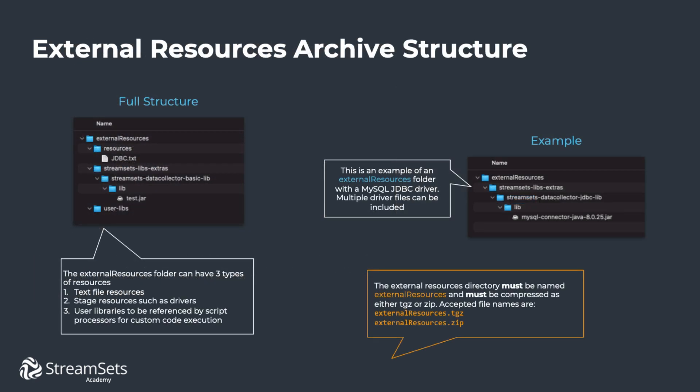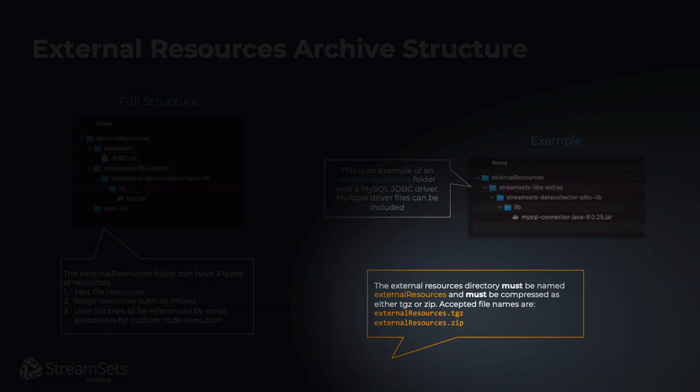The external resources archive folder structure is pretty simple. The folder can have three types of resources: text file resources, stage resources such as drivers, and user libraries that may be dependencies in a script evaluator stage for custom code execution. Note that the external resources folder must be named as shown here. The compressed archive of this folder can be of type TGZ or zip.